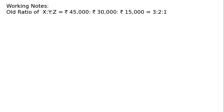Old ratio of X to Y to Z: they share profits in proportion to their capitals. Capital proportions are 45,000, 30,000, 15,000, giving a ratio of 3:2:1. Y has retired, so the remaining partners X and Z continue in ratio 3:1.